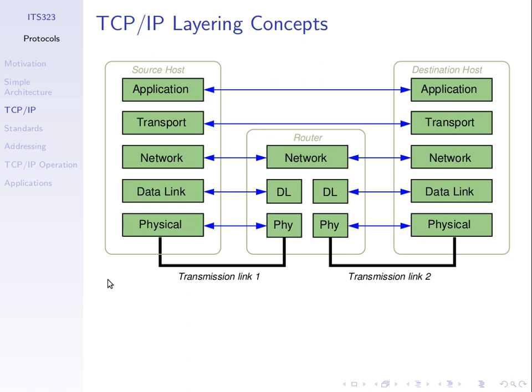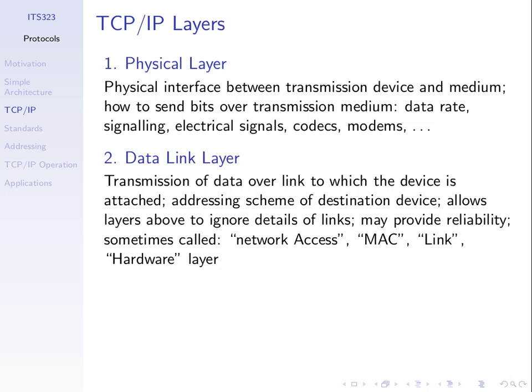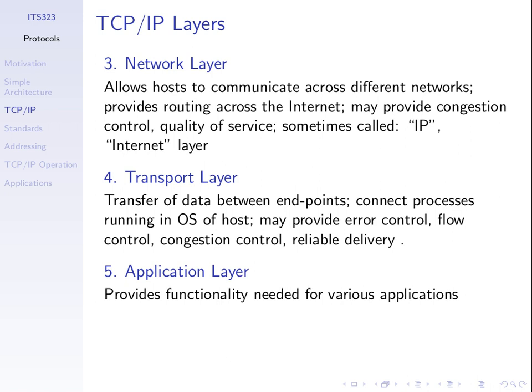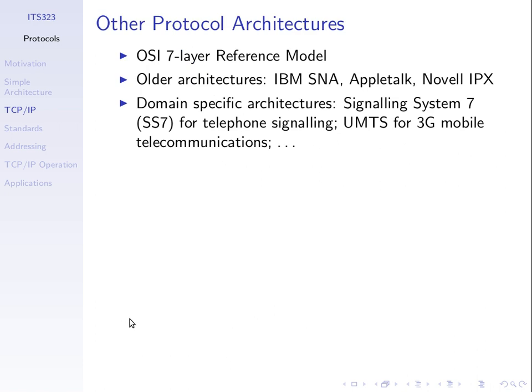There are other protocol architectures in the world. In the past there was the OSI seven-layer architecture, which didn't become popular. IBM, Apple, and Novell had their own architectures. Novell had IPX. These older ones have lost out to TCP/IP, becoming less and less popular as all organizations now use TCP/IP. Some architectures are still used in specific domains — for example, UMTS for 3G mobile communications specifies a different protocol architecture, and SS7 for fixed telephone systems. But the primary one for general purpose use is this five-layer TCP/IP stack.